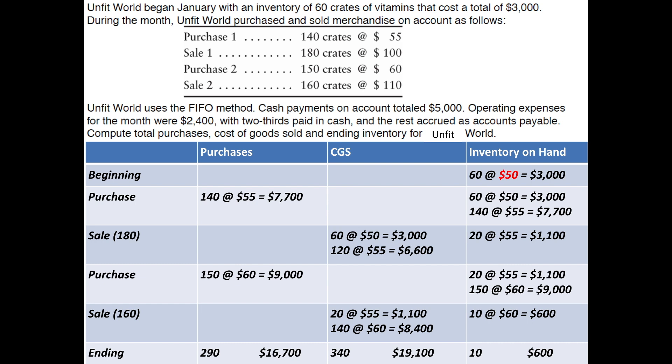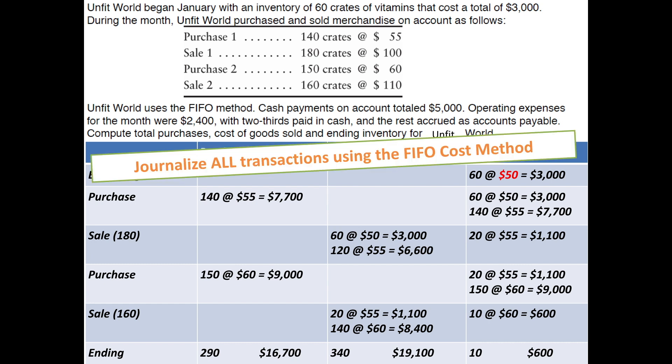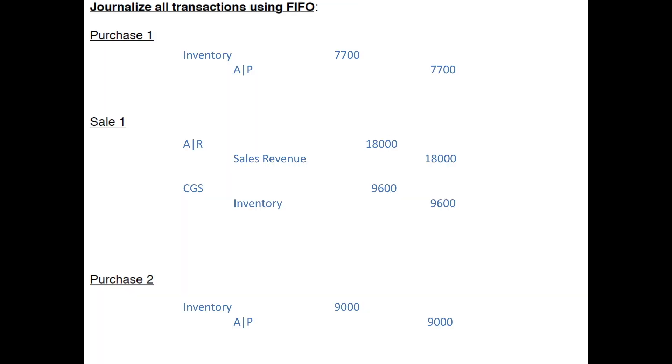Once you have your spreadsheet and cost of goods sold calculated, you need to get this into your books. We need to journalize all the transactions using the FIFO costing method — purchase one, sale one, purchase two, and sale two. Starting with purchase one: we purchased inventory totaling $7,700 on account, so we debit Inventory and credit Accounts Payable for $7,700.